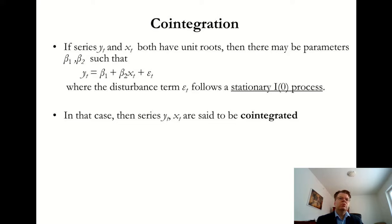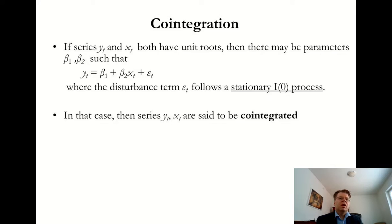Suppose we have two variables, y and x, both of which have some stochastic growth trends characterized by unit roots. It would be naive to simply fit a static regression model. But if we find that the error term is actually stationary, then we can say these series are co-integrated. It's possible that there is some kind of long-term equilibrium relationship between these variables — we don't necessarily know whether x causes y or y causes x, but they fluctuate over time in a similar manner.